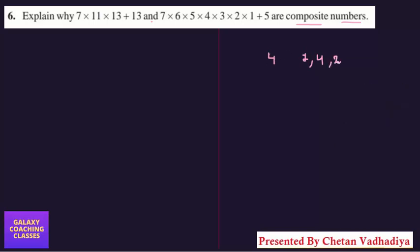Now we need to prove that 7×11×13+13 is a composite number. It's simple. You can see 13 is here and the plus sign is there, so these are two terms. Now take out 13 common from these two. Let me take out 13 common: 13(7×11+1).